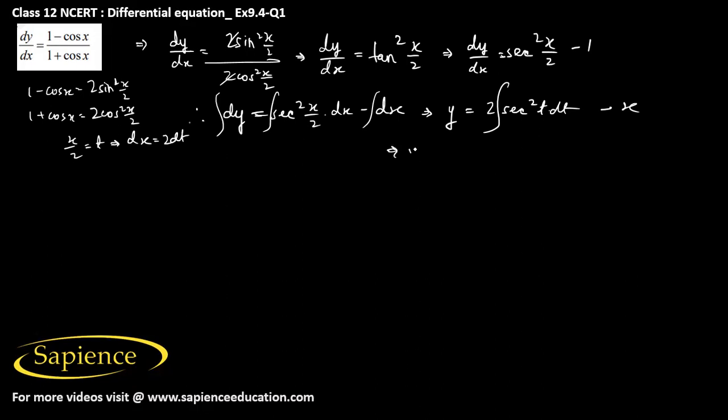Then this will be y equals 2 integral sec² t is tan t. Now t is x/2, so 2 tan x/2 minus x plus some constant c. So this is the required differential equation. This is the final answer. Thank you.